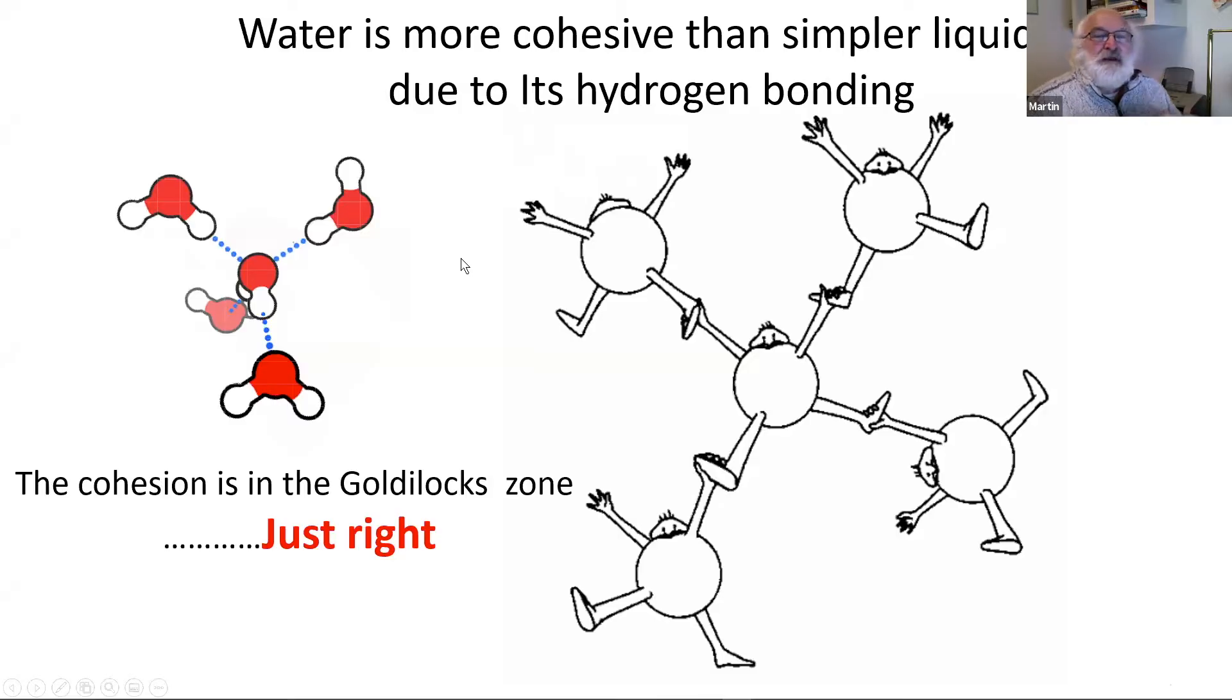The cohesion, the strength of force between the molecules, is in what we call the Goldilocks zone. It's just right. It's neither too weak nor too strong. If it was any weaker or stronger, we would not be alive.